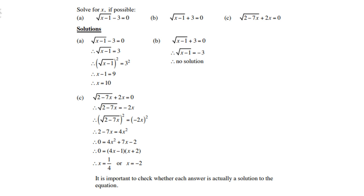Let's look at a few examples — solving for x if possible. Example (a): square root of (x minus 1) minus 3 equals 0. The minus 3 is outside the square root, so transfer the 3 to the right-hand side, then square both sides: left-hand side gives x minus 1, right-hand side gives 9, so x equals 10. Example (b) is the same but with minus 3 on the right-hand side — squaring both sides yields no solution.